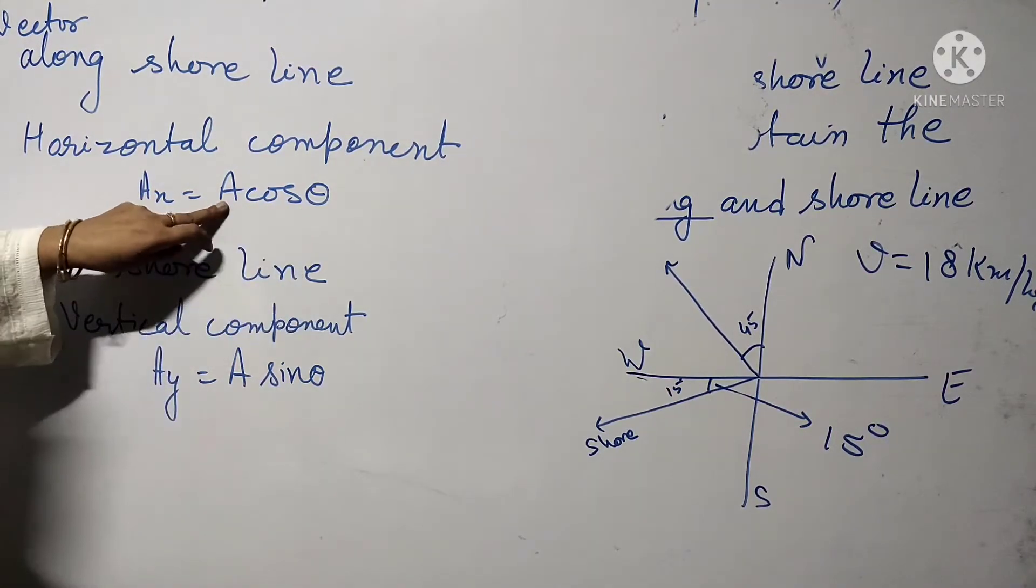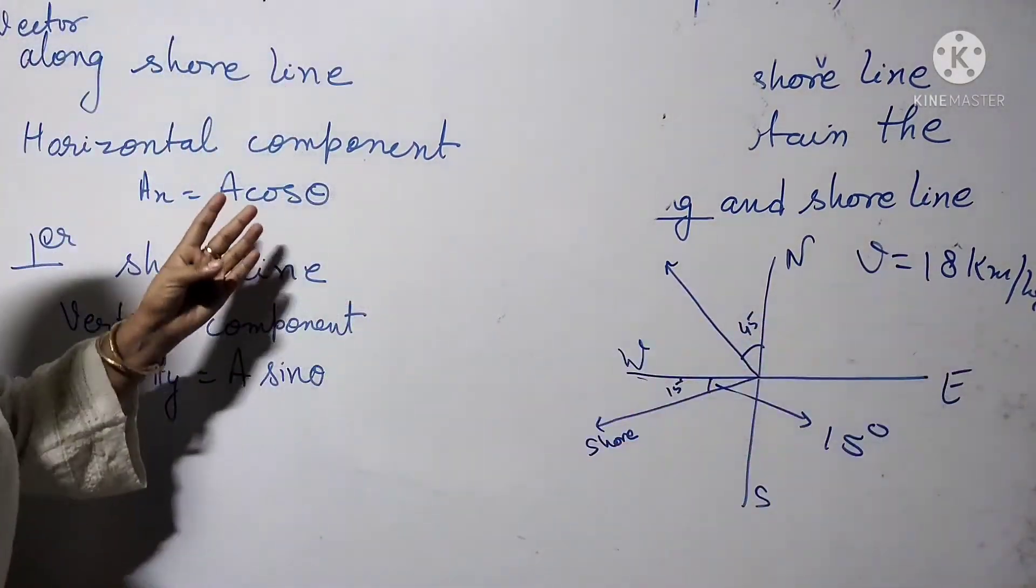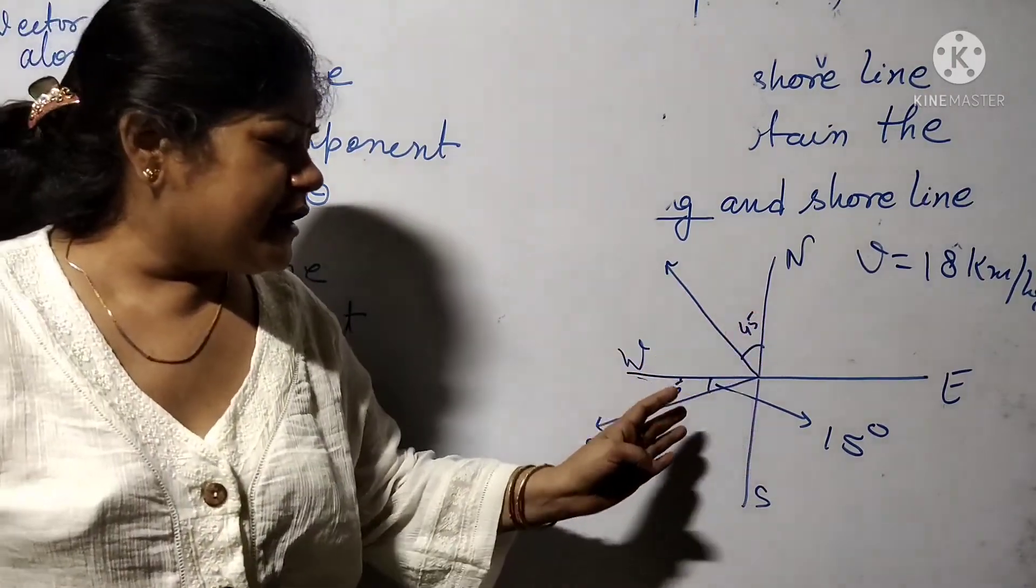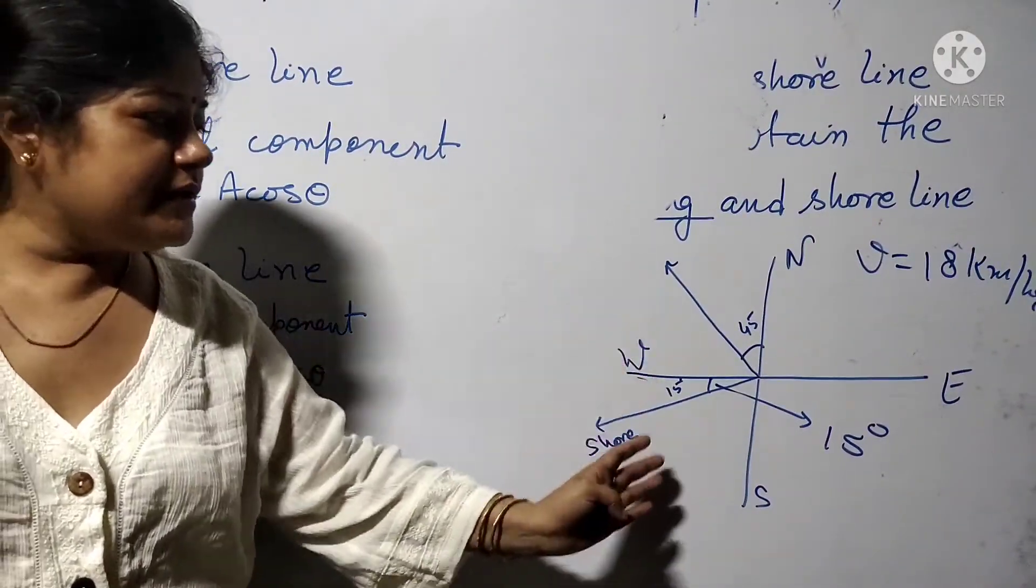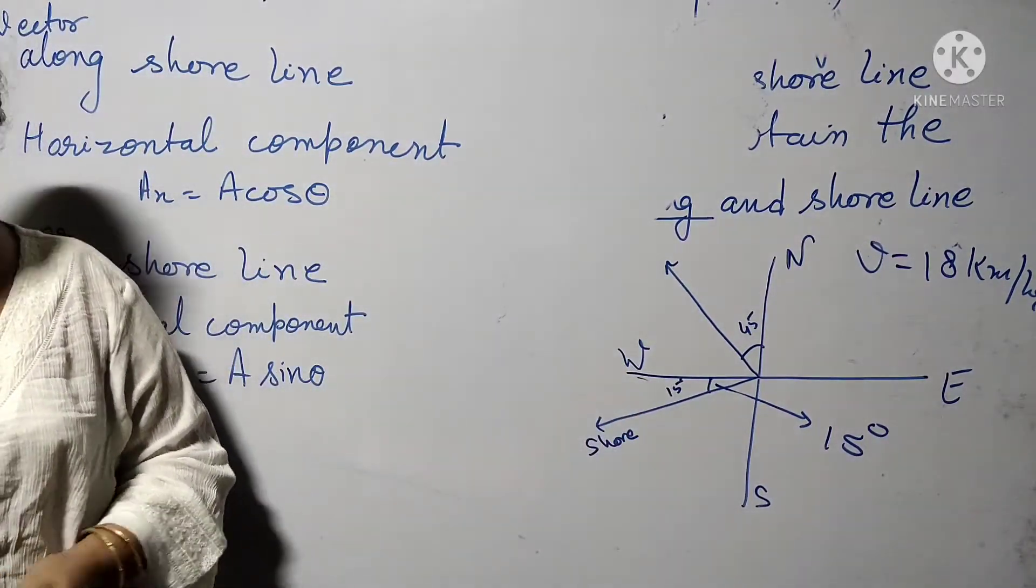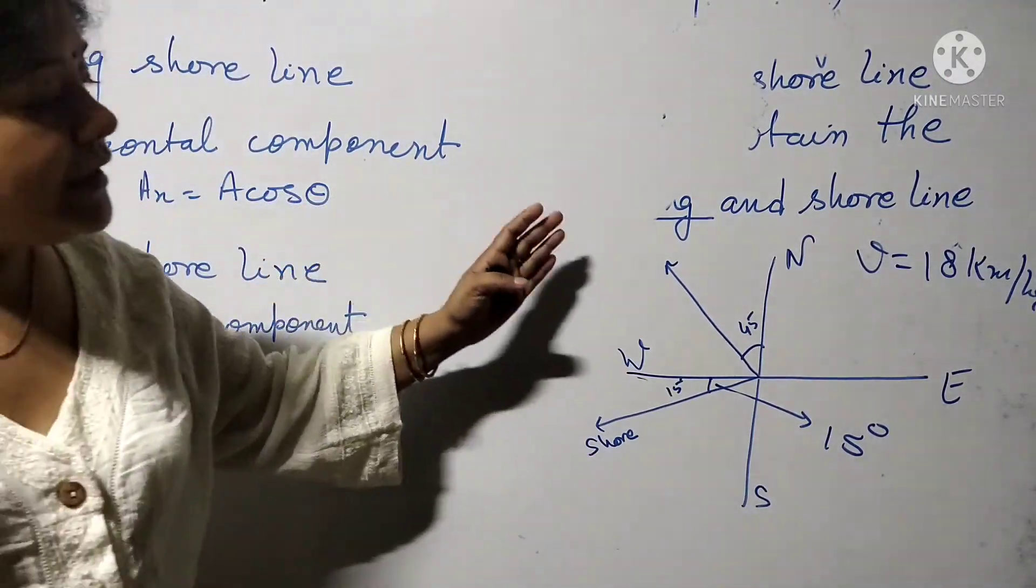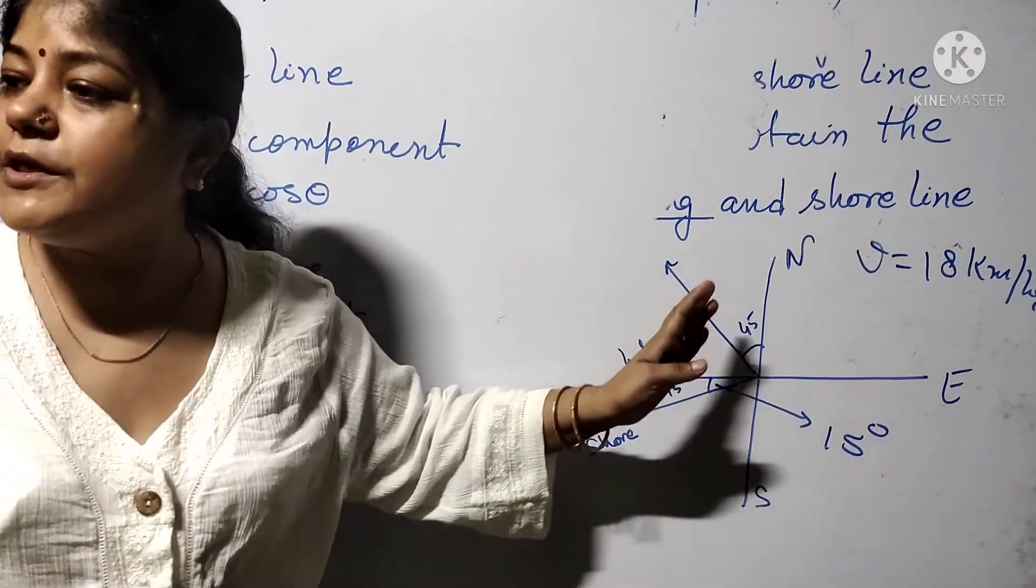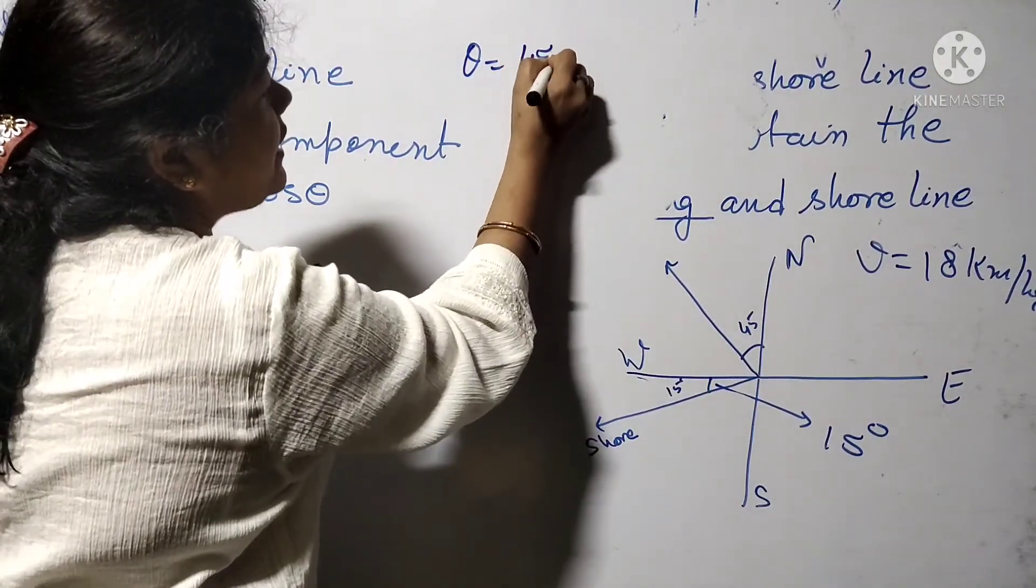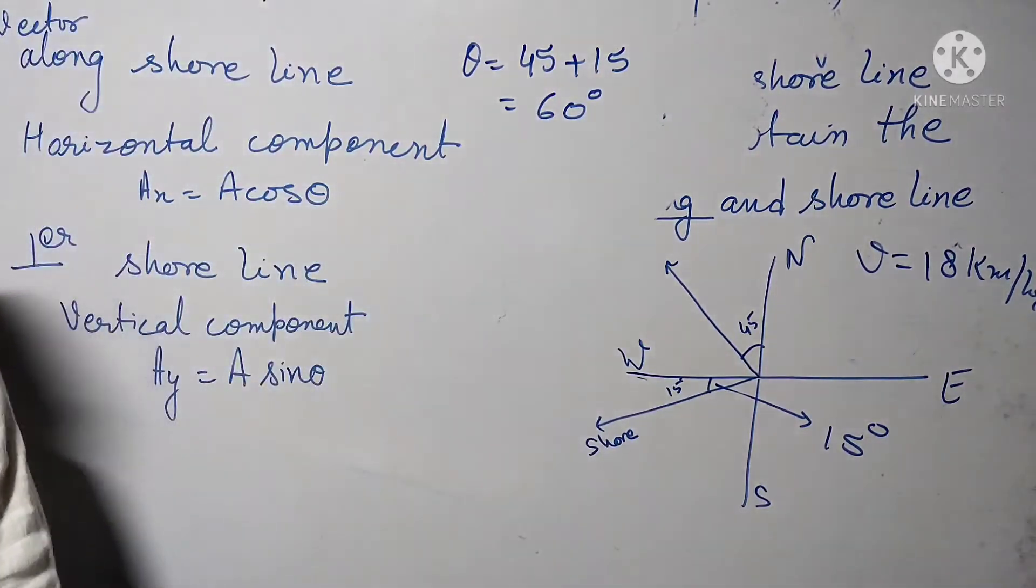Now we have the value of vector A which is 18 km per hour, but what is the angle theta? Is it 15 degrees, 45 degrees, subtraction of 45 and 15, or addition? In order to find the angle between boat and shoreline, theta equals 45 plus 15 which equals 60 degrees.